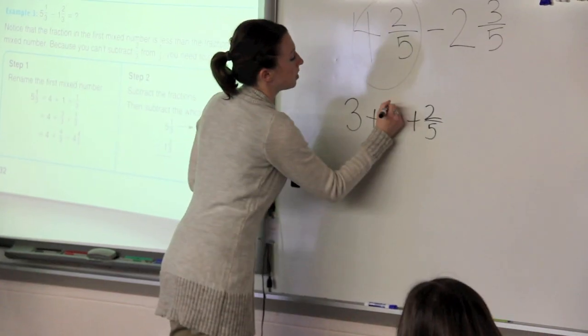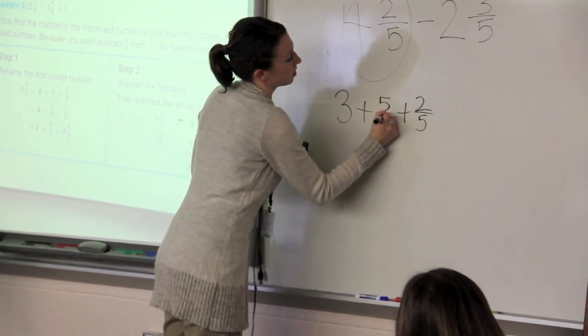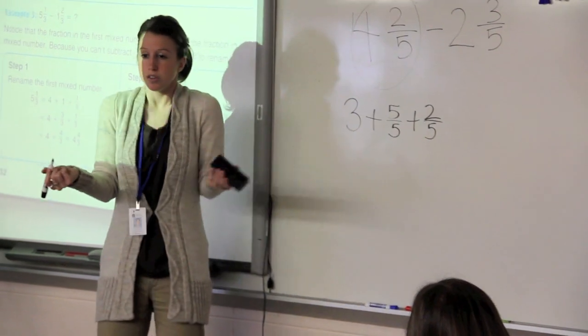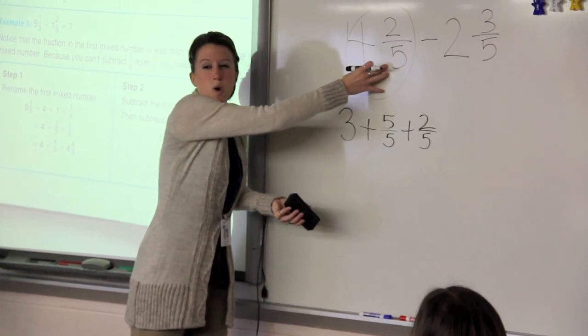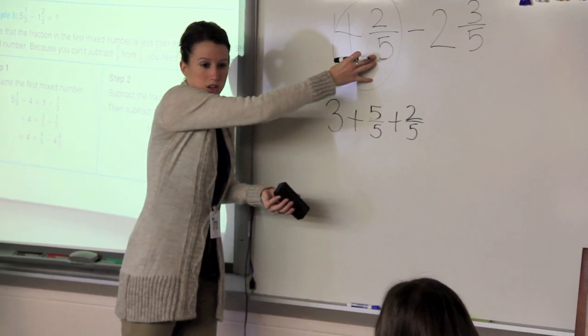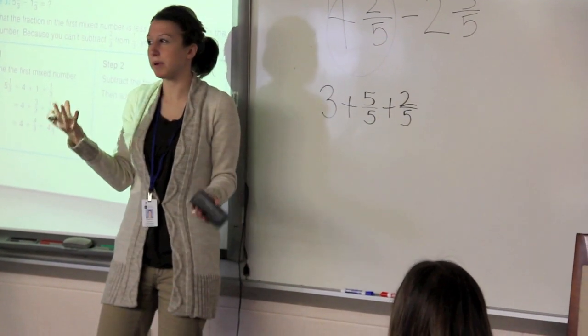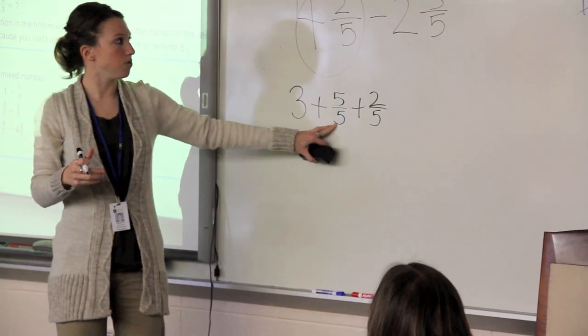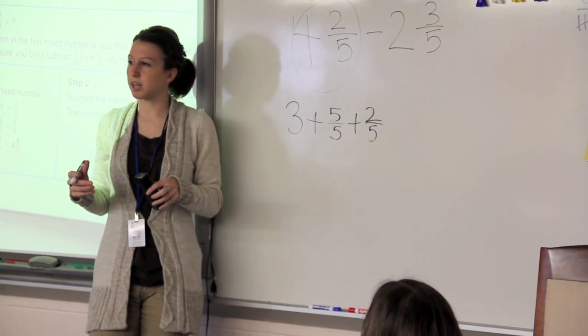Okay, and then we're going to use that. Is 5 or 5 the same thing as 1? Yeah. So really, I'm not changing what 4 and 2 fifths actually equals. I'm writing it in a different form, but I'm not actually changing the mixed number. The mixed number needs to stay the same as equal. Okay, so what happens if I do this? What am I going to get?